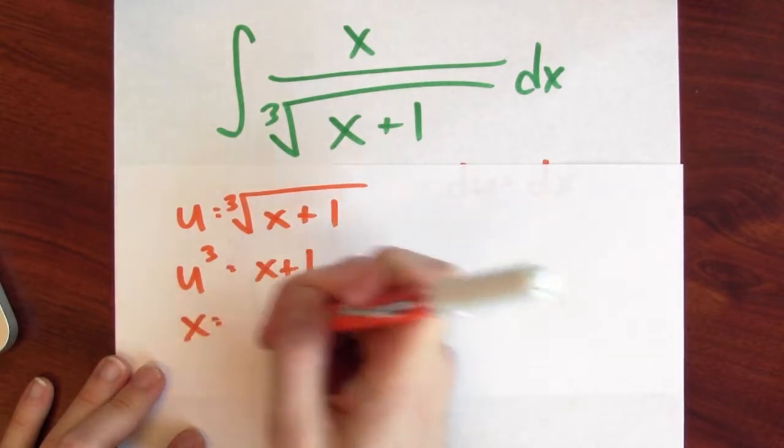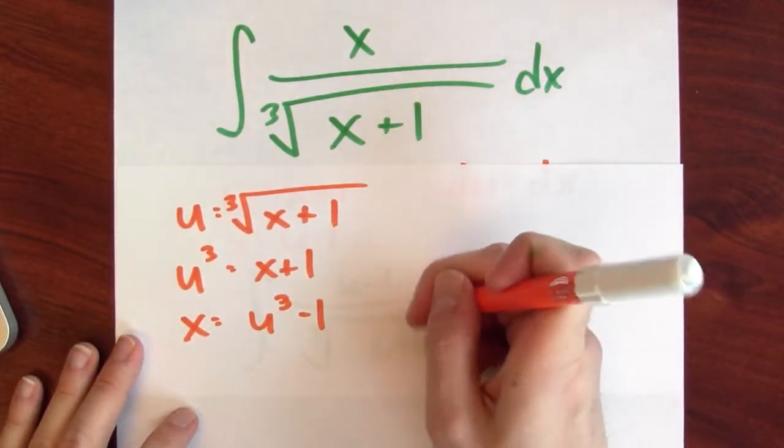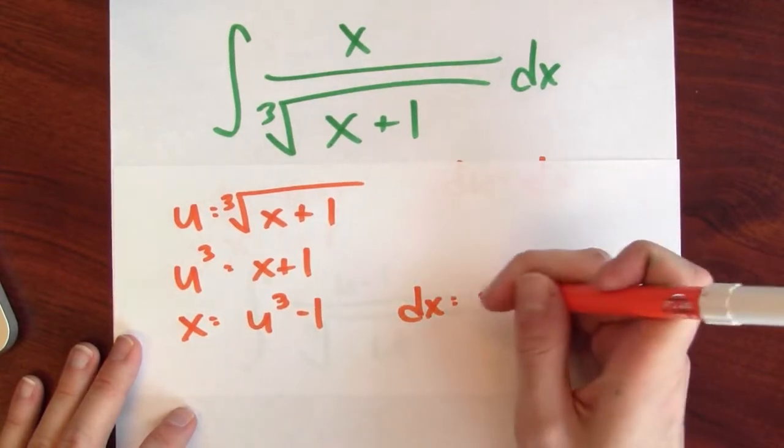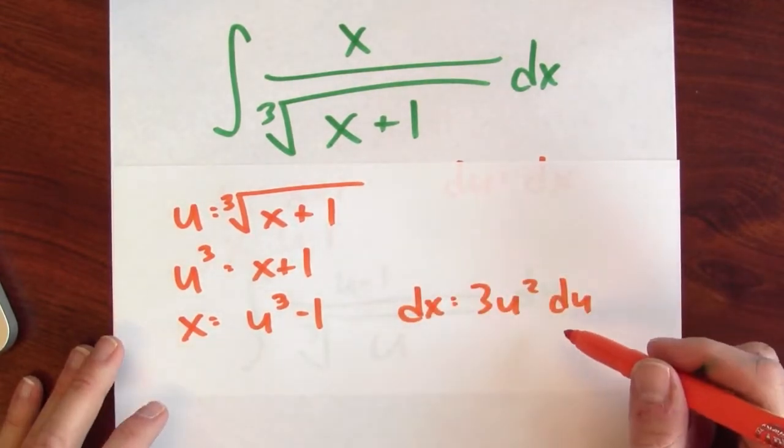Or in other words, x is u cubed minus 1. And that tells me what dx is. In that case, dx is 3u squared du. Now I could make this substitution.